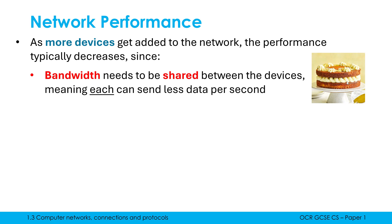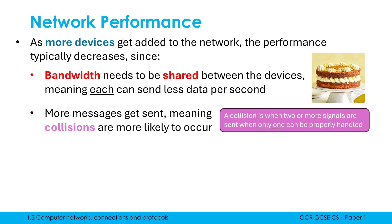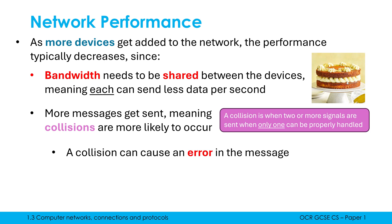Another reason why increasing the number of devices affects performance is that more devices means more messages are being sent, and what this means is collisions are more likely to occur. A collision is when two or more signals are sent when only one can be properly handled. The word collision in real life we associate with a car crash — two cars crashing into each other. Similarly, in a network, if two messages are sent in opposing directions along the same wire, they're going to crash into each other, which often causes an error in one or both of those messages.